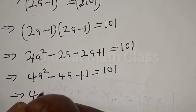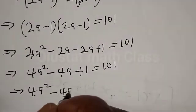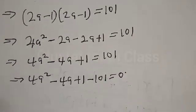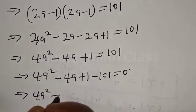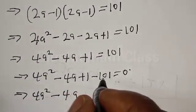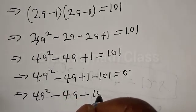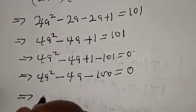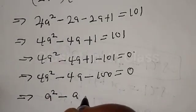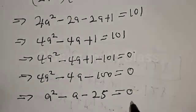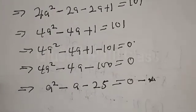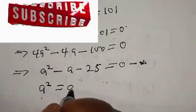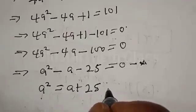This implies that 4a squared minus 4a plus 1 minus 101 equals 0, giving us 4a squared minus 4a minus 100 equals 0. Now dividing all terms by 4, we get a squared minus a minus 25 equals 0. Let's call this equation star. From equation star, a squared equals a plus 25. Let's call this equation star star.